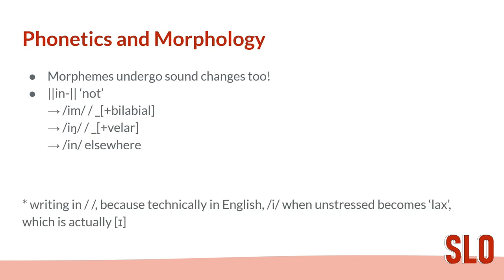Now linking phonetics back to morphology — morphemes undergo sound changes too. For example, the morpheme |IN|, meaning NOT, is realized as IM in the environment before a bilabial sound such as B or P — for example, 'imperfect'. It is realized as ING before a velar sound — for example, 'ingrate'. And elsewhere, it is realized as IN — for example, 'insufficient', 'infinite'.